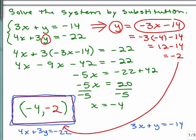This is a system that in another video we solved by using substitution. It was 3x plus y equals negative 14 and 4x plus 3y equals negative 22. In that problem it was pretty easy to solve for y, so we did the substitution and back substitution and got negative 4, negative 2 for the solution.